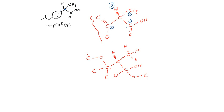Getting back to our priorities: each of these are carbon, so we go one step further. This carbon has three oxygens bonded to it; this carbon has three hydrogens; and this one has three carbons. We look at the first point of difference: one oxygen atom, one hydrogen, and one carbon. Oxygen has the highest atomic number, so it's the highest priority. Carbon has the second highest atomic number, so it'll be number two. Hydrogen has the lowest, so it'll be three. We already established that the hydrogen substituent directly bonded to the stereocenter is the lowest priority.